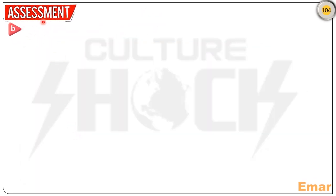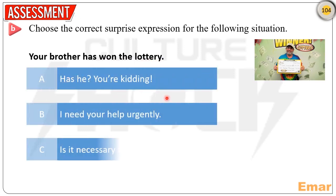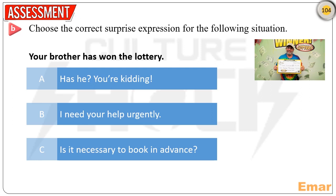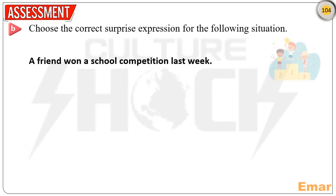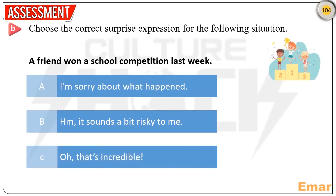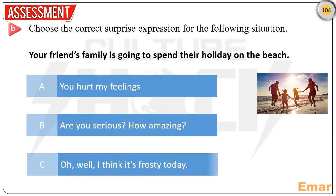Assessment: choose the correct surprise expression for the following situation. 'Your brother has won the lottery' — Has he? You're kidding. A friend won a school competition last week — Oh, that's incredible. Your friend's family is going to spend their holiday on the beach — Are you serious? How amazing.